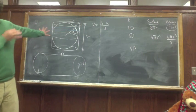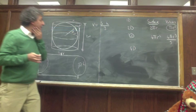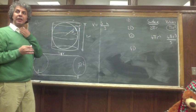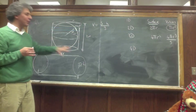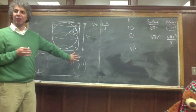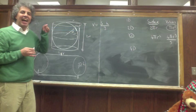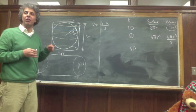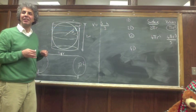Of course I cannot draw this on the board, but the end result is: the side surface of this folded object in 4 dimensions is identical to the volume of the 4-dimensional sphere.